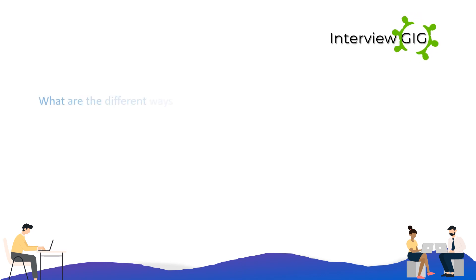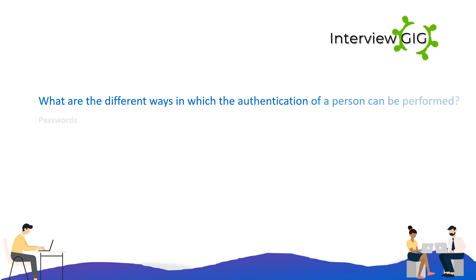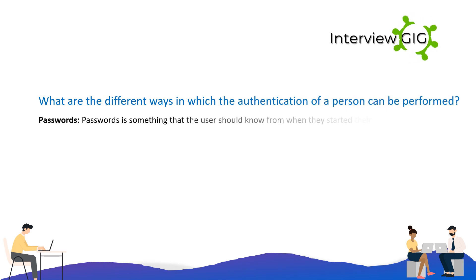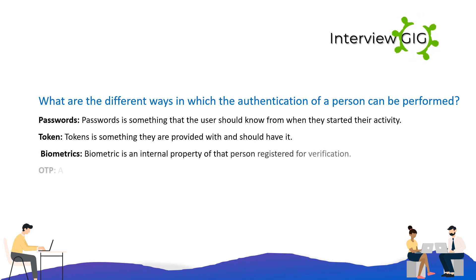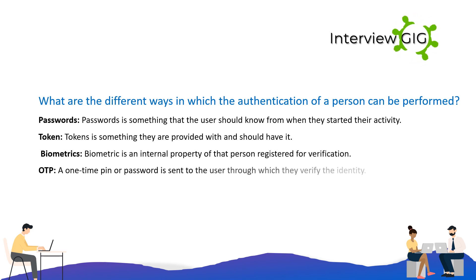What are the different ways in which authentication of a person can be performed? Passwords — something the user should know. Tokens — something they are provided with and should have. Biometrics — an internal property of that person registered for verification. OTP — a one-time PIN or password is sent to the user through which they verify their identity.